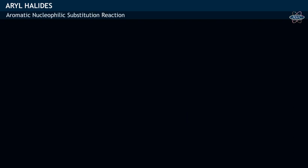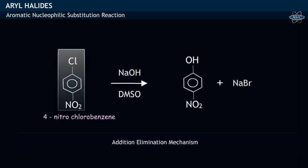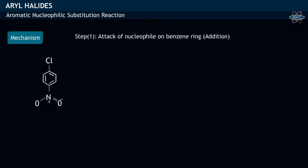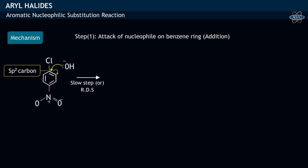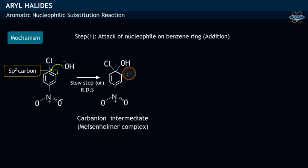Let us study the mechanism for aromatic nucleophilic substitution in the reaction between 4-nitro-chlorobenzene and sodium hydroxide. In the first step of the mechanism, the nucleophile hydroxide ion attacks the sp2 hybridized carbon bearing the leaving group chlorine on the phenyl ring, followed by pi electron transfer. This results in the formation of a carbanion intermediate, also called the Meisenheimer complex.